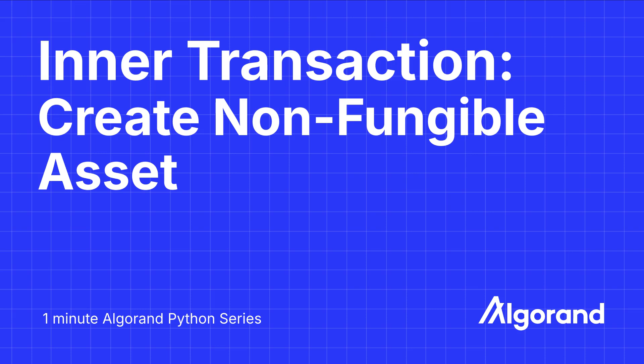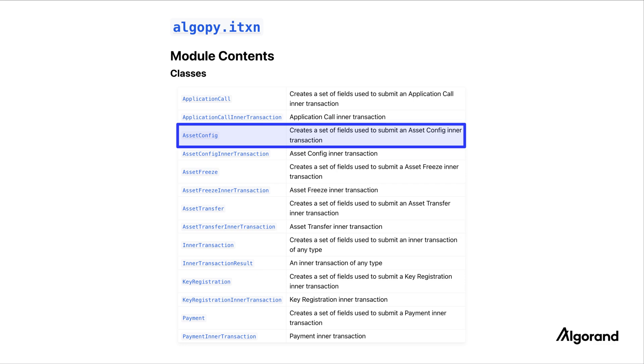Let's learn how to create NFTs with the AssetConfig inner transaction within a smart contract. Just like creating fungible ASAs, you use the ITXN.AssetConfig inner transaction to create a non-fungible ASA with different configurations.